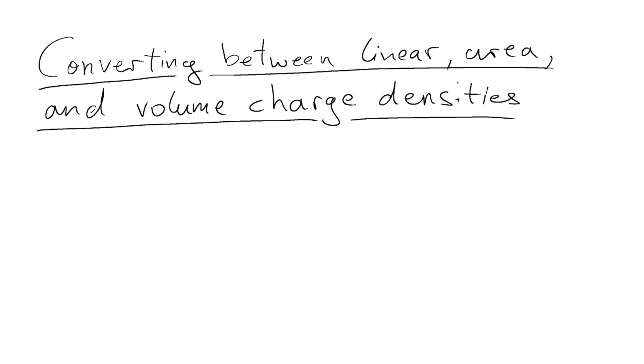That density could be across a length giving you a linear charge density. Linear charge densities are usually given by the letter lambda. You could have an area charge density which is usually given as sigma, and you could have a volume charge density which is given as rho.